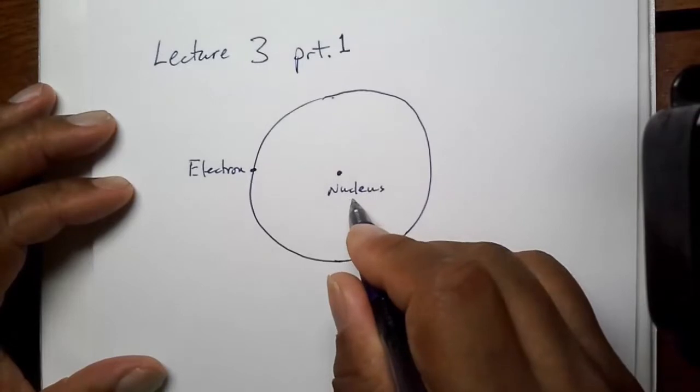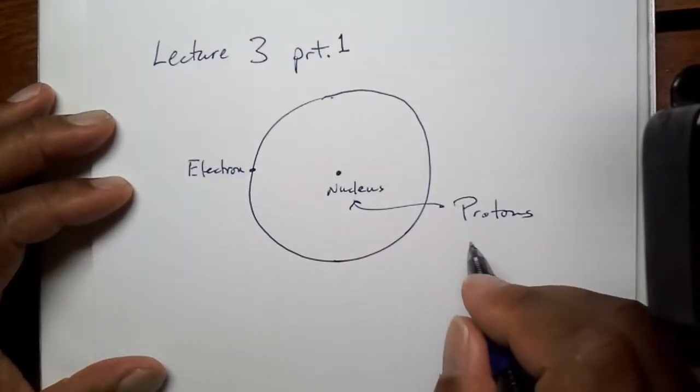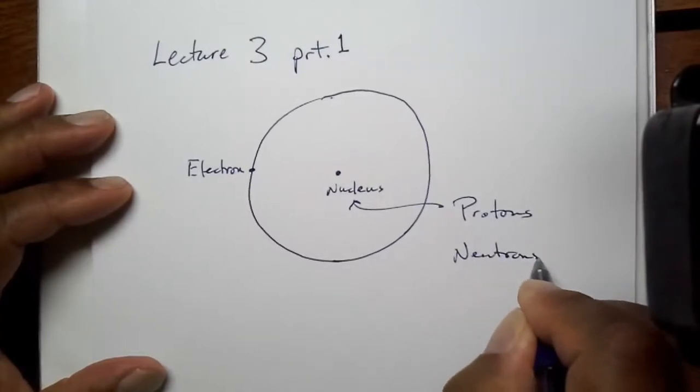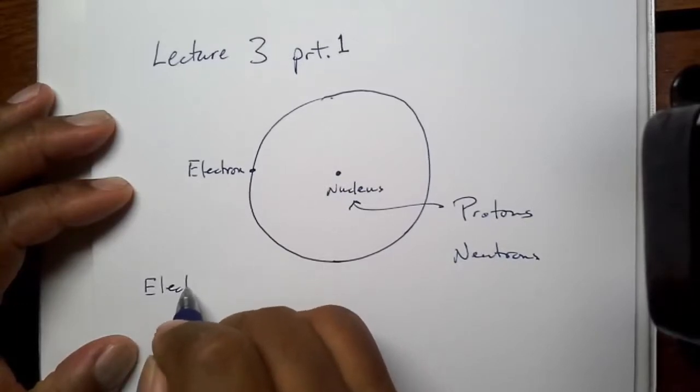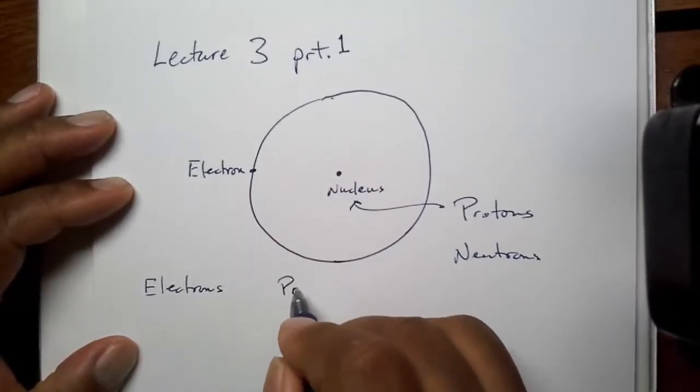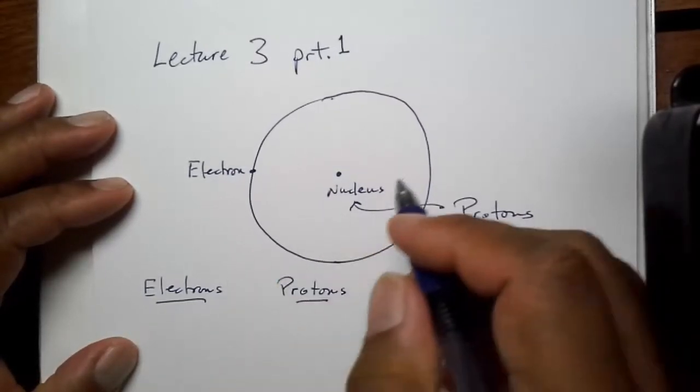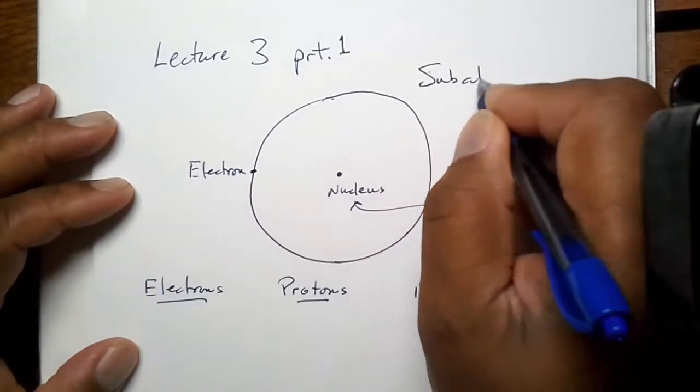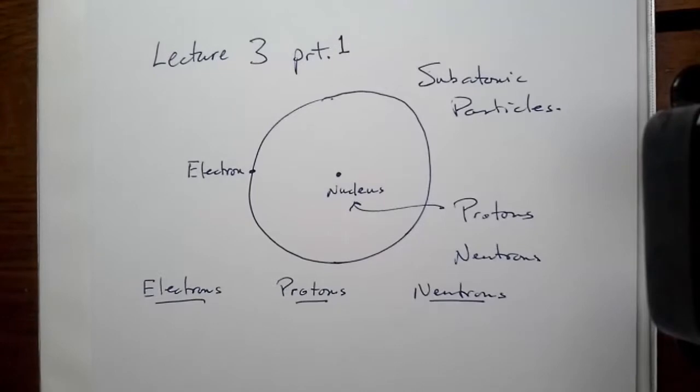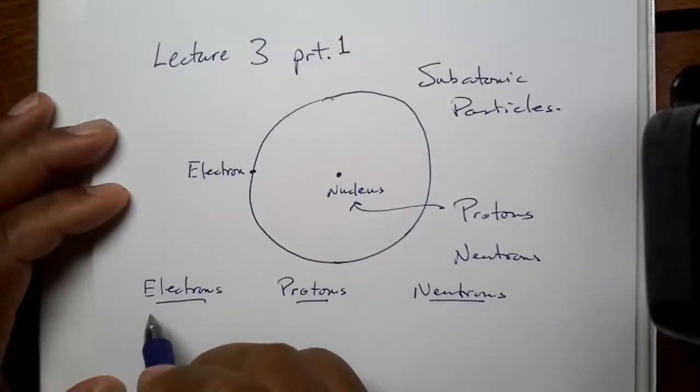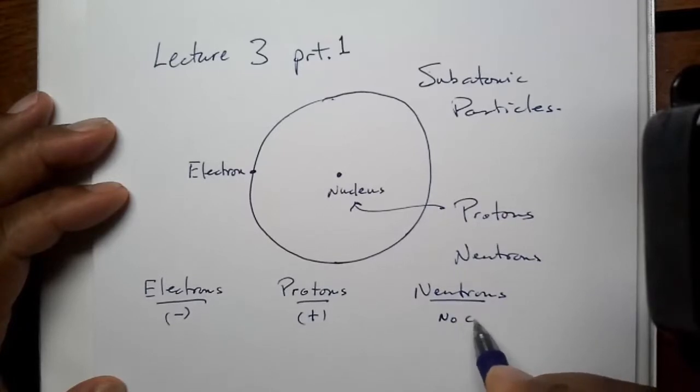Because we remember, alright, the nucleus contains our protons and our neutrons, and of course the electron cloud. So what are some of these characteristics that we need to know about our subatomic particles, as they're referred to? Okay, so we all know that electrons are negatively charged, protons are positively charged, and neutrons have no charge.